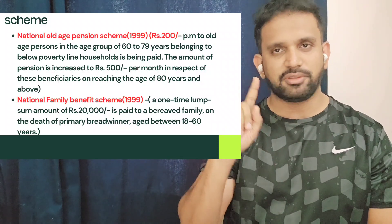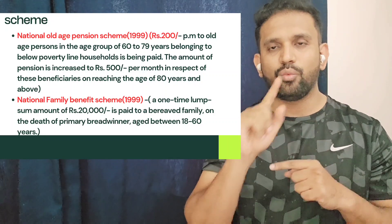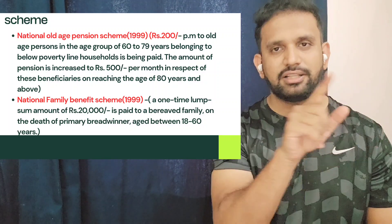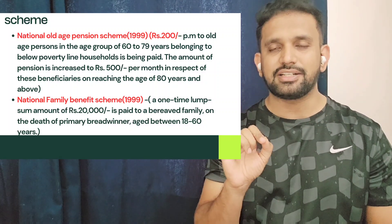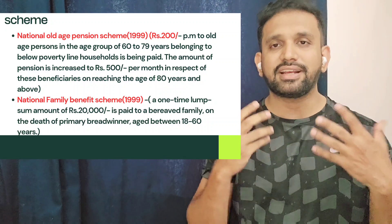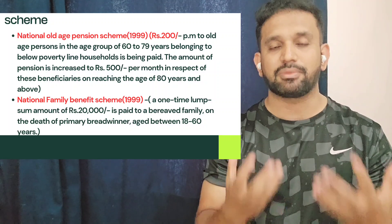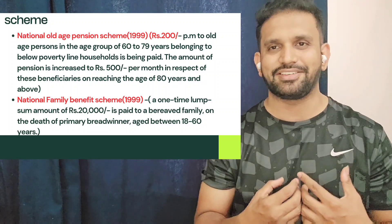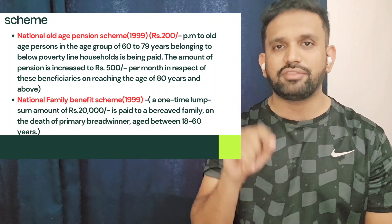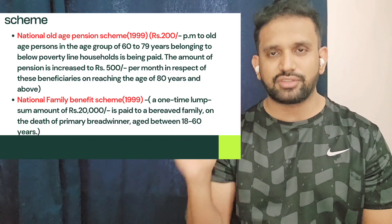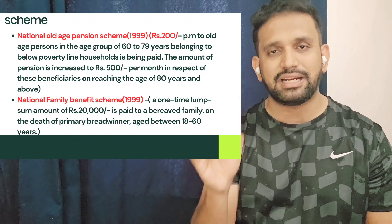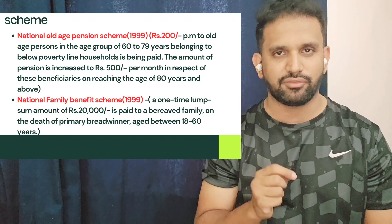Under the National Old Age Pension Scheme, if you are between 60 to 79 years, you will get 200 rupees per month in your account. If you are 80 years or above, the government will give you 500 rupees. This is a conditional cash transfer scheme — the conditions are the age criteria one has to fulfil in order to avail the benefit. Whenever we talk about conditional transfer schemes, there should be some conditions that one must fulfil to receive the benefit.